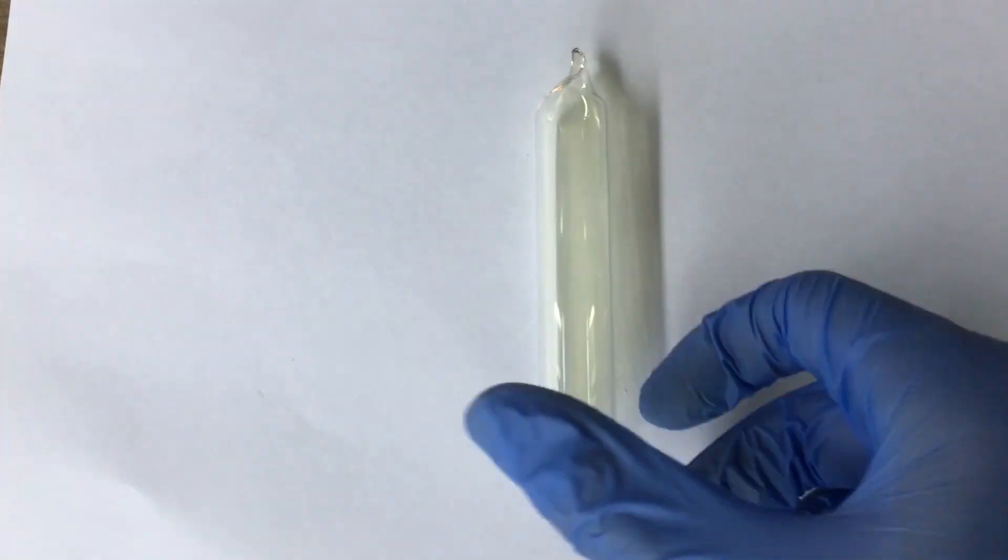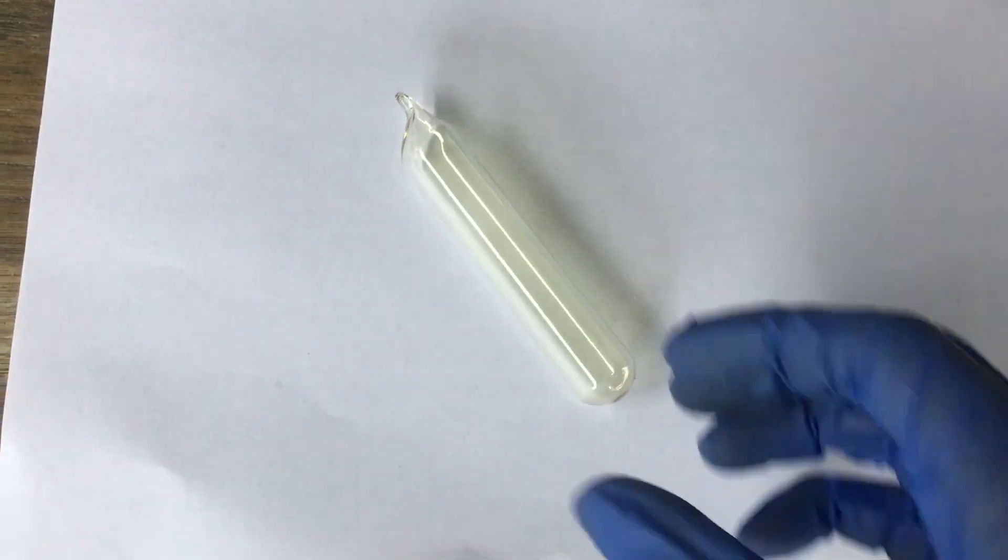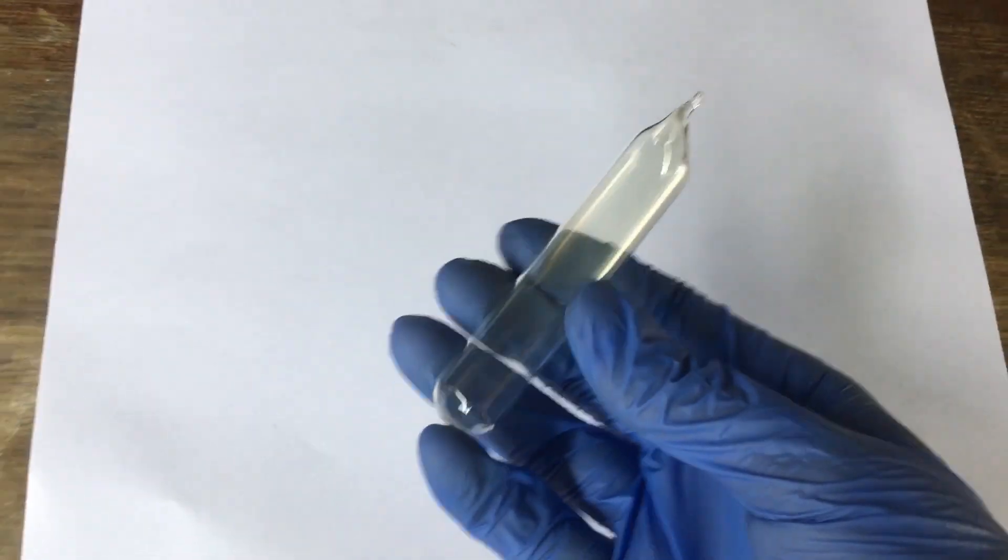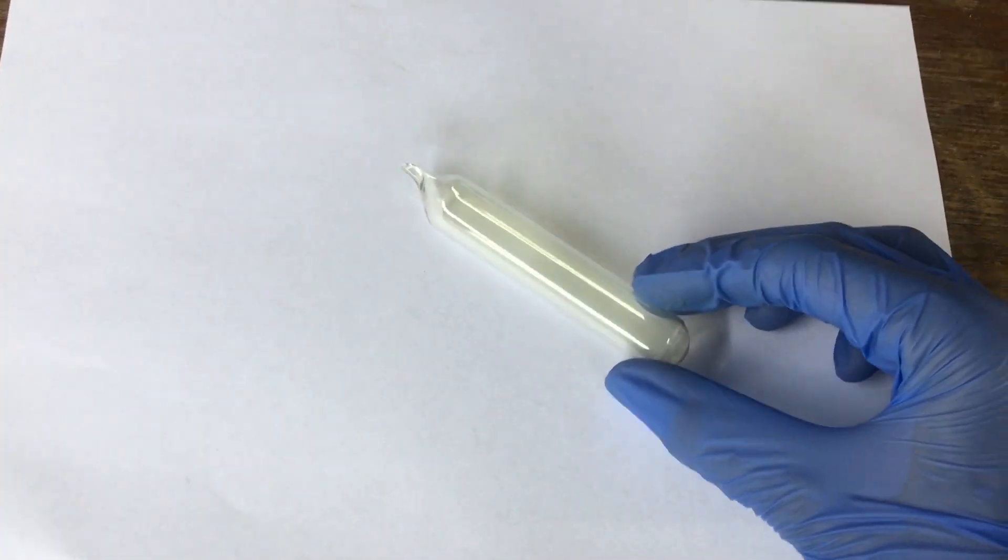And you can see, if we put it on a white background, it's definitely that greenish yellow color of chlorine. We do have chlorine sealed in this ampule, which is exactly what I wanted.